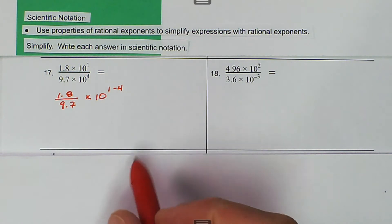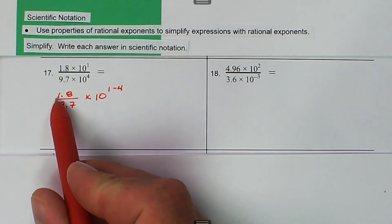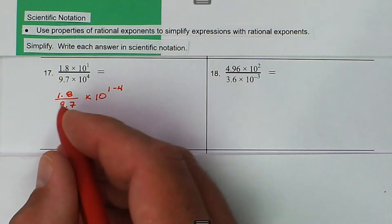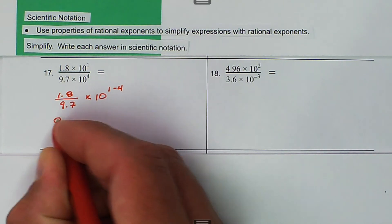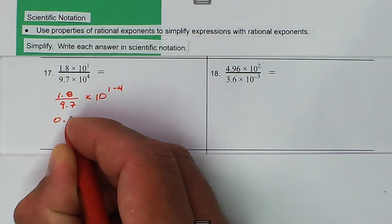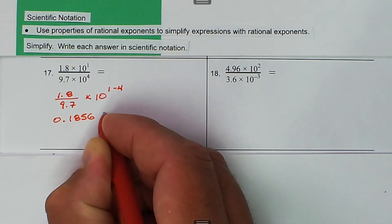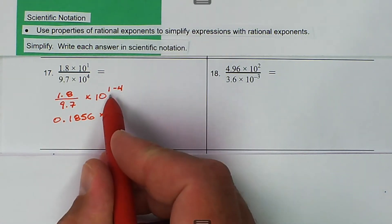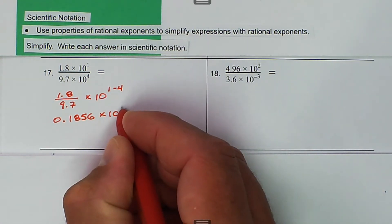In our calculator, 1.8 divided by 9.7 gives us 0.1856. Multiplying by 10^(1-4), that's 10^(-3).